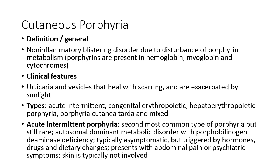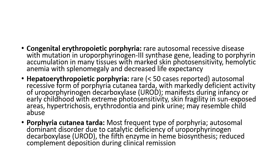Congenital erythropoietic porphyria is a rare autosomal recessive disease with mutation in the uroporphyrinogen 3-synthase gene, leading to porphyrin accumulation in many tissues with marked skin photosensitivity, hemolytic anemia with splenomegaly, and decreased life expectancy. Hepatoerythropoietic porphyria is also rare; only less than 50 cases have been reported so far. It is an autosomal recessive form of porphyria cutanea tarda with markedly deficient activity of uroporphyrinogen decarboxylase. It manifests during infancy or early childhood with extreme photosensitivity, skin fragility in sun-exposed areas, hypertrichosis, erythrodontia, and pink urine, which may resemble child abuse.